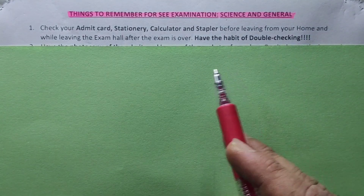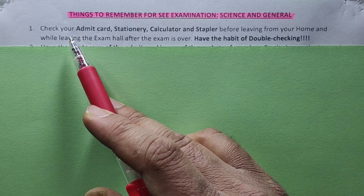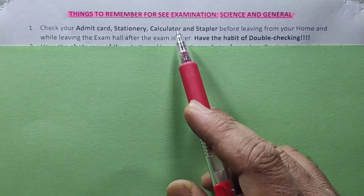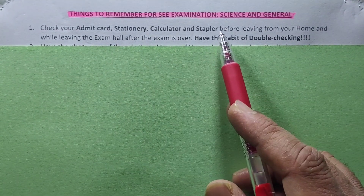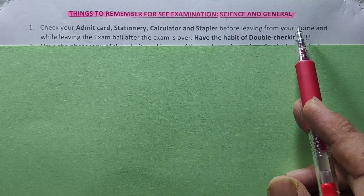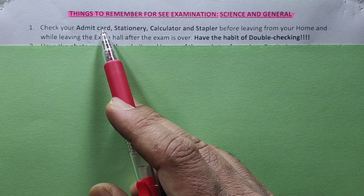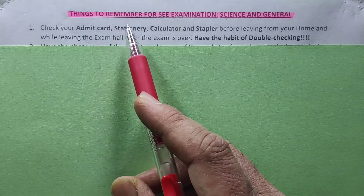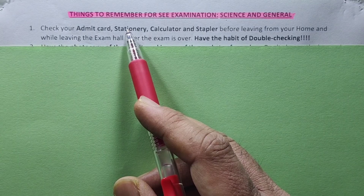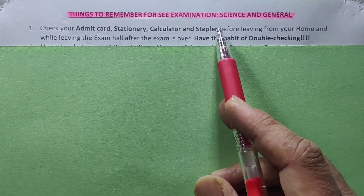First of all, check your admin card, stationery, calculator, and stapler before leaving from your home. For the exam, you will need your admin card. This is stationery: pencil, pen, compass, protractor, calculator, and stapler.